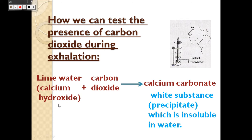Do you know why? This is because the clear lime water, called calcium hydroxide, reacts with Carbon Dioxide to form calcium carbonate. So, if asked why we use lime water to test the presence of Carbon Dioxide, the answer is: because Carbon Dioxide makes lime water turbid or milky. Carbon Dioxide makes lime water turbid because calcium hydroxide reacts with Carbon Dioxide to form calcium carbonate.